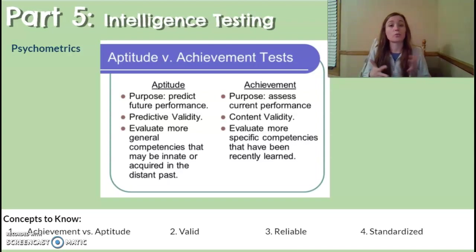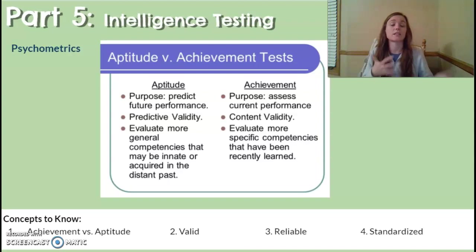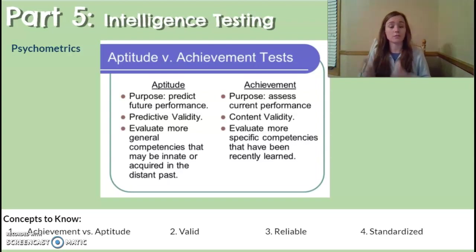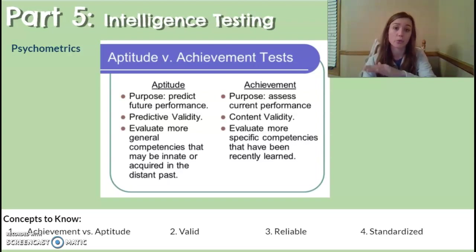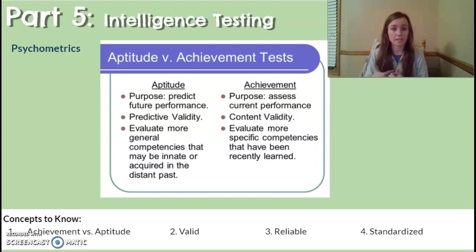A test is reliable if it yields consistent results when taken multiple times. For example, if you took the ACT and got a 32 the first time and a 15 six months later, that would be very unreliable. Typically with the ACT, scores fall within a few points of each other, perhaps slowly increasing in small increments. A reliable test should yield consistent results every time. A standardized test is one that has been made uniform in its format and procedures so that everyone takes the same questions in the same style and can be compared to determine scores.